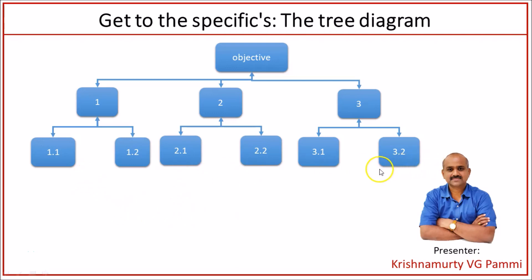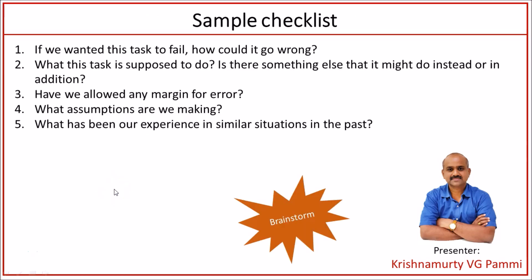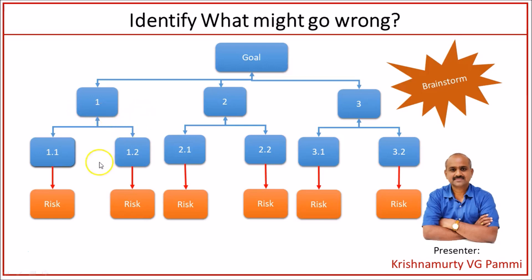For each task on the third level, brainstorm and come up with what could go wrong. You may use a sample checklist: If we wanted this task to fail, how could it go wrong? What is this task supposed to do? Is there something else it might do instead or in addition? Have we allowed any margin for error? What assumptions are we making? What has been our experience in similar situations in the past? Using such questions during brainstorming, we can come up with a list of risks relevant to the tasks on the ground — these risks represent what might go wrong in the future.